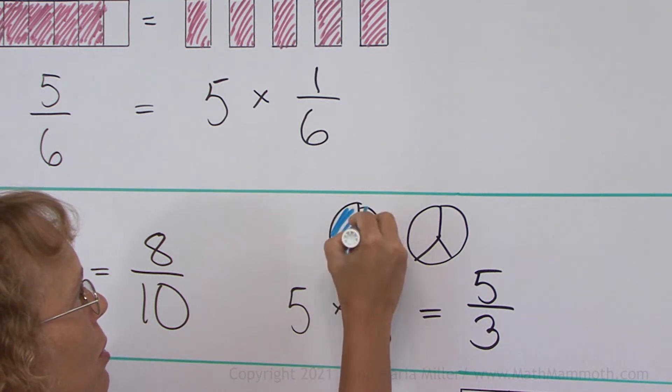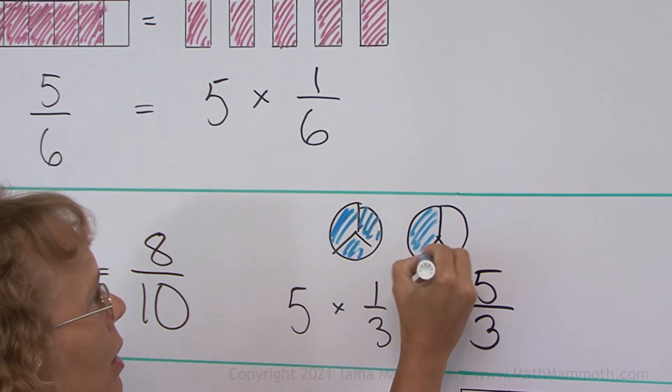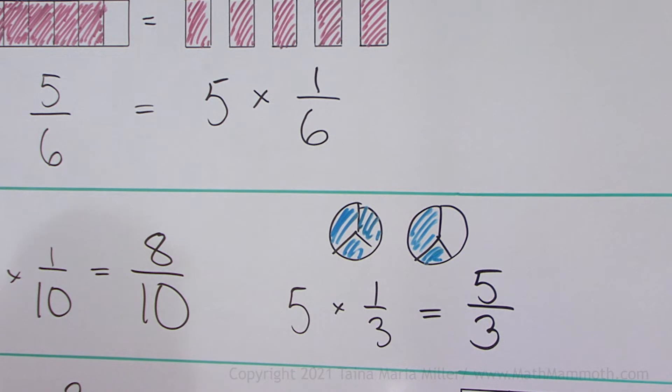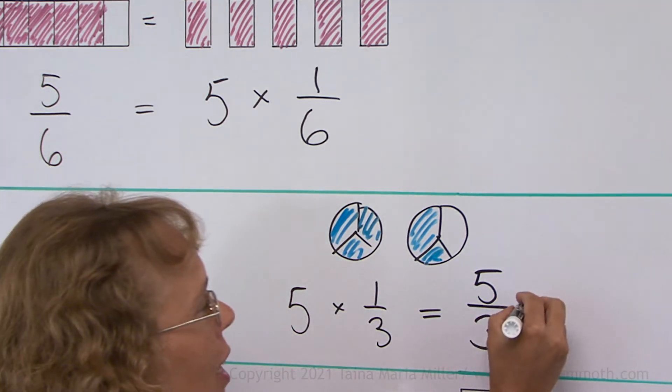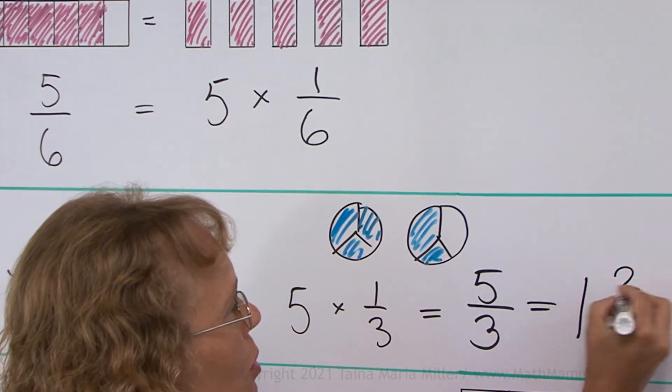Let me color to show you. There's 1, 2, 3, 4, and 5 thirds. So we will write this as a mixed number. It is actually 1 whole pie and 2 thirds.